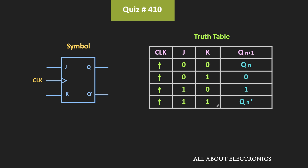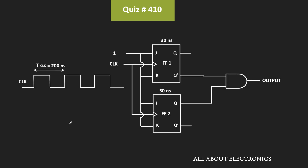That means currently, if this Q output is 0, then after the clock transition it will become 1. And currently, if Qn is 1, then after the clock transition it will become 0. Since both J and K inputs of the two flip-flops are connected to logic one, after every clock transition the output of the flip-flop will toggle.